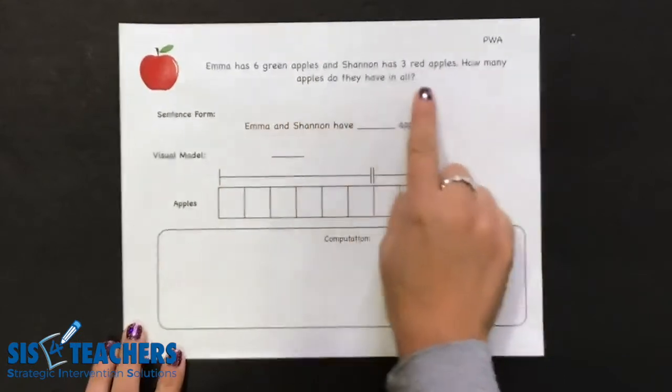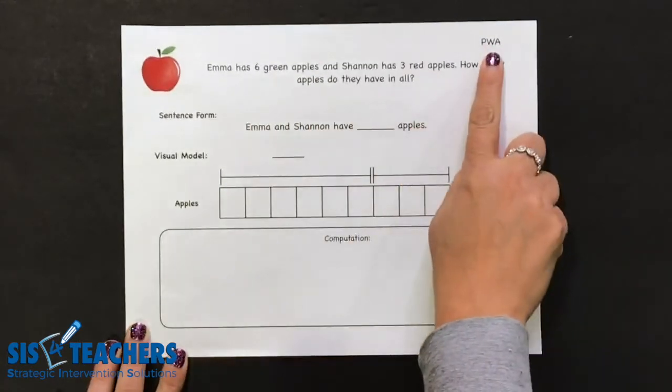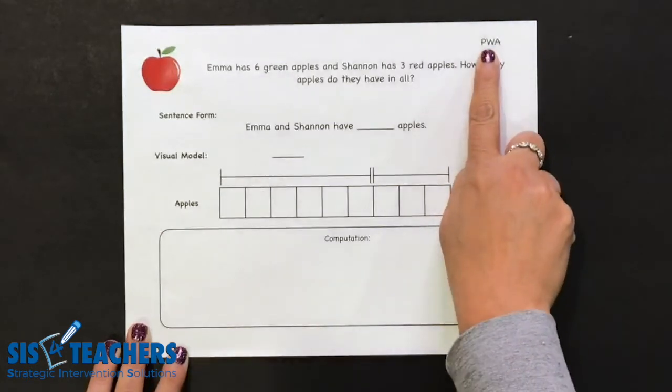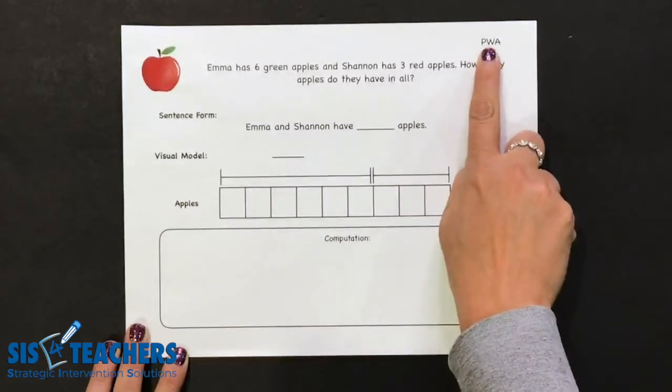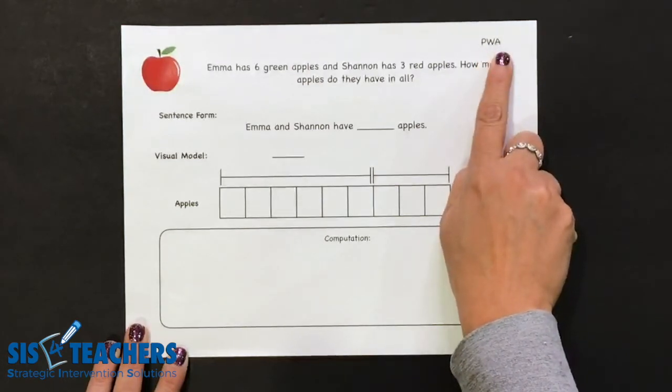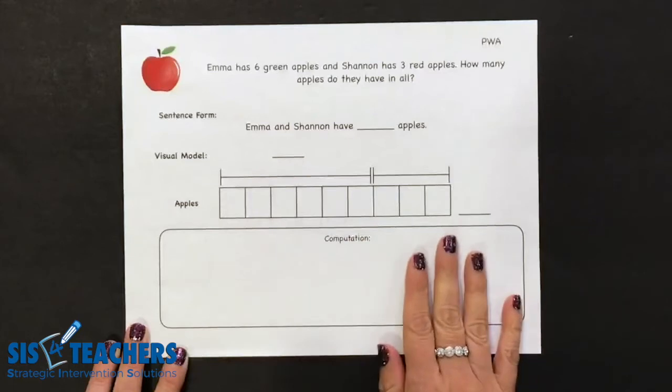The sample we're showing today is how to do a part-whole addition problem. In our journals, we have these labeled for teachers. PWA stands for part-whole addition. When we look at this story mat, we have different elements that will be on a checklist.